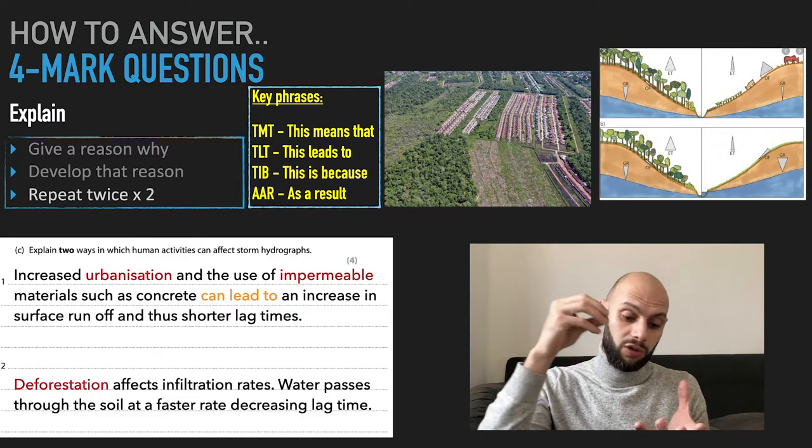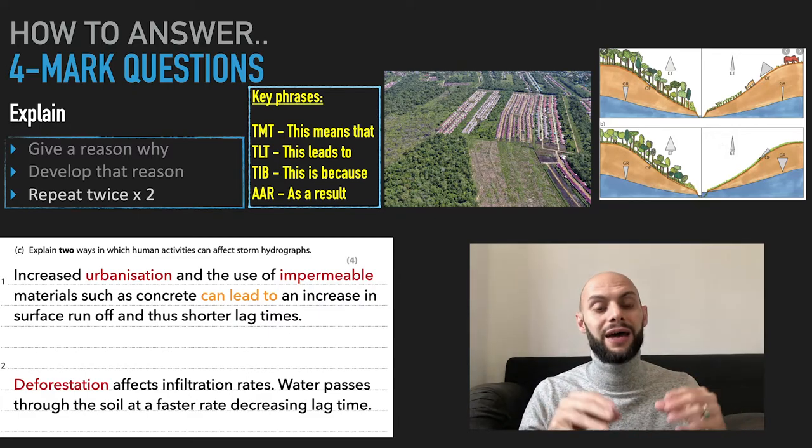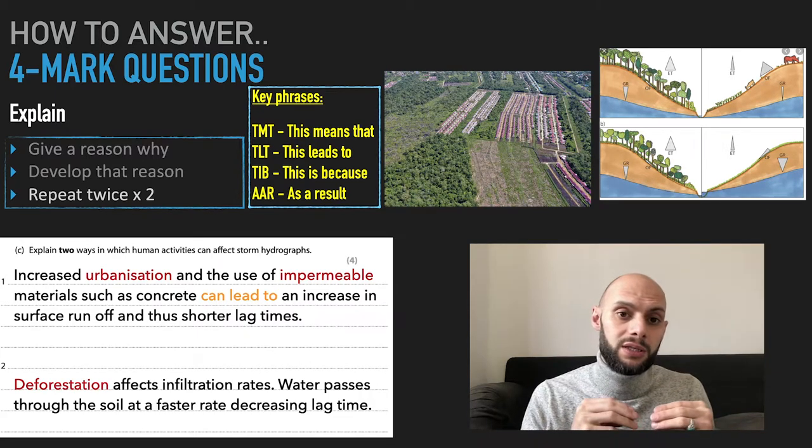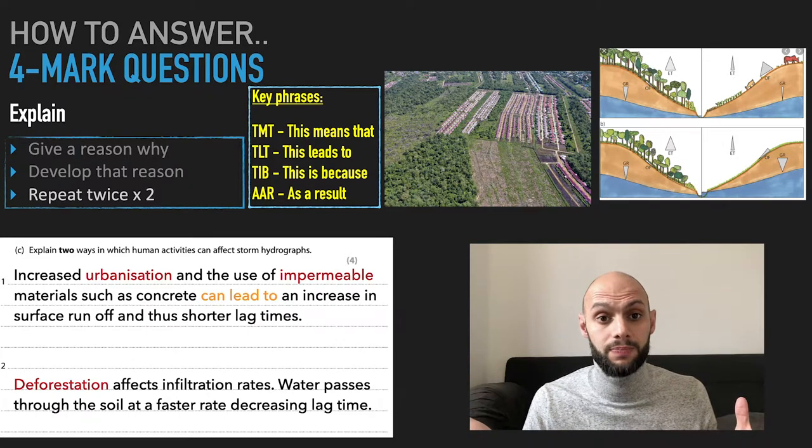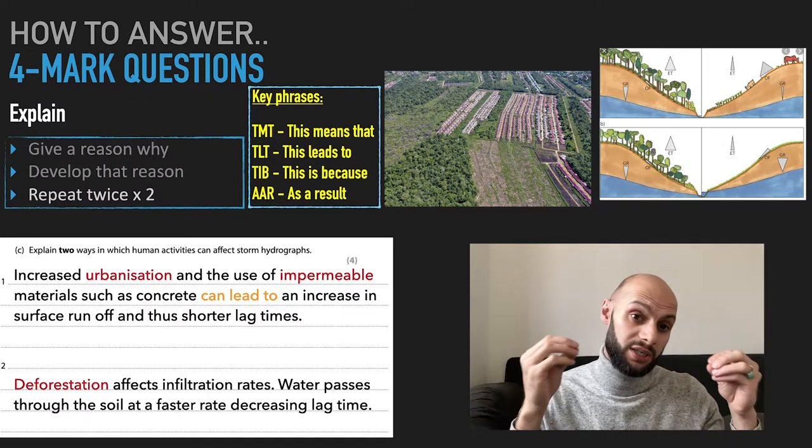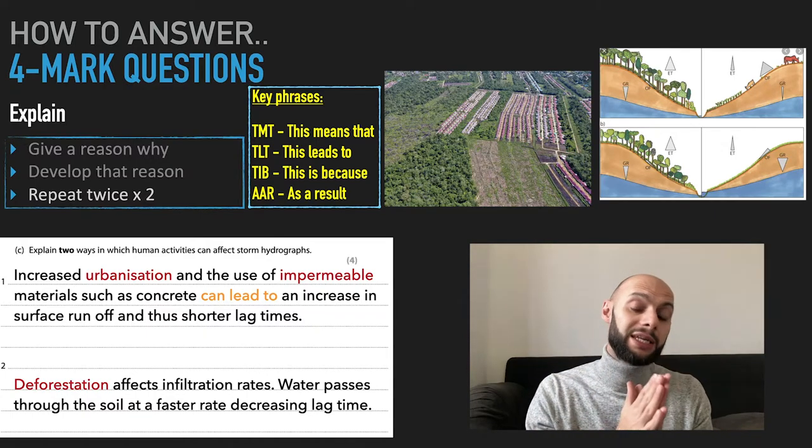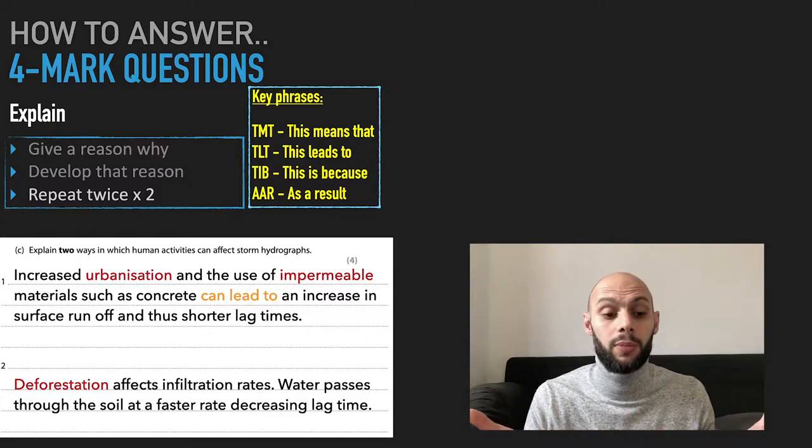So this affects your storm hydrograph. When deforestation occurs due to, let's say, urbanization, water passes through the soil at a faster rate, decreasing your lag time again. So this affects your storm hydrograph.